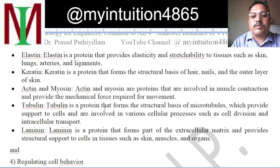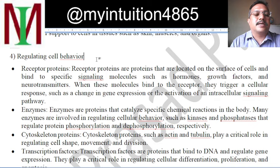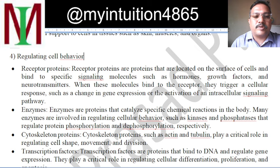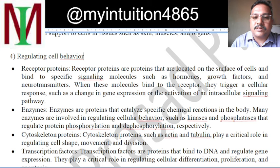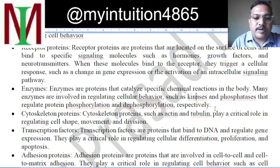Laminin is a protein which forms part of the extracellular matrix and provides structural support to cells in tissues such as skin, muscles and organs. Another function is regulating cell behavior. Receptor proteins trigger cellular responses such as changes in gene expression or activation of intracellular signaling pathways. Enzymes are proteins which catalyze particular chemical reactions involved in regulating cell behavior — examples include kinases and phosphatases, which regulate protein phosphorylation and dephosphorylation respectively. Cytoskeleton proteins such as actin play a critical role in regulating cell shape, movement and division.